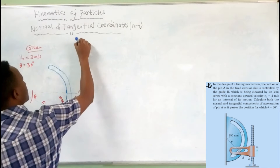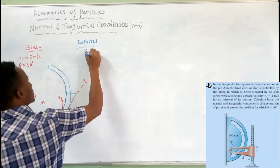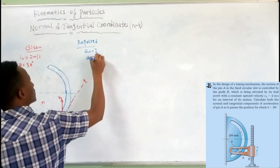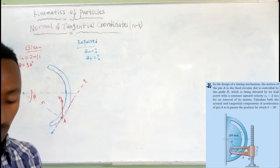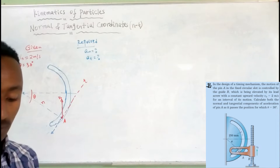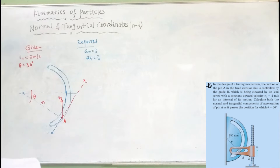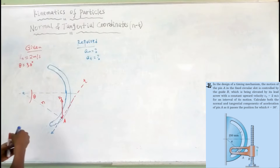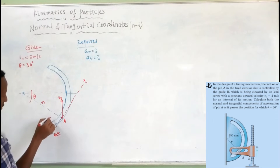A normal is equal to how much? A tangential is equal to how much? Determine the natural form, which is a tangential form with the direction of the normal axis.